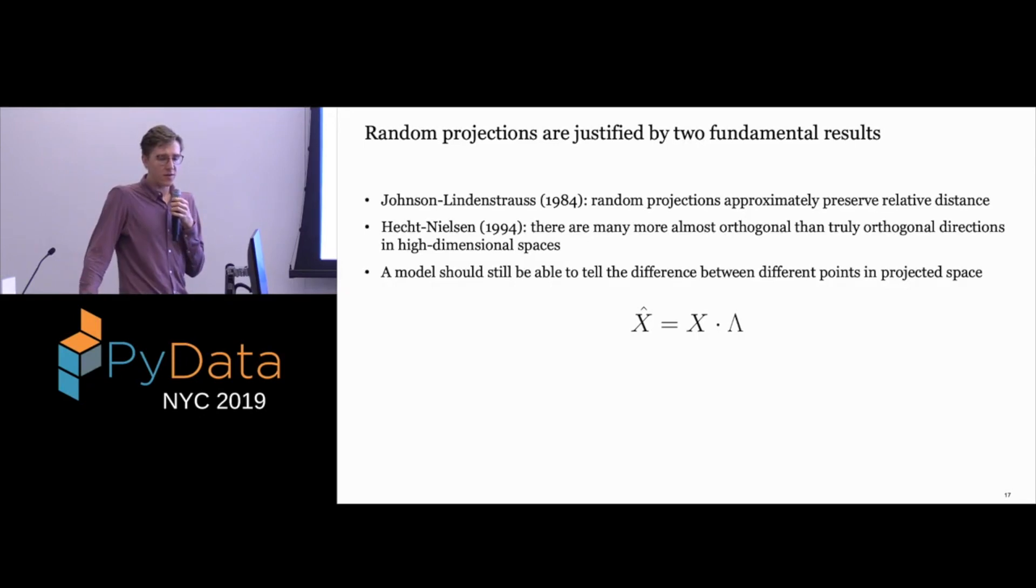These two theoretical results are kind of why random projections would work. The Johnson-Lindenstrauss lemma says that random projections approximately preserve relative distance, and maybe these are gross oversimplifications, so if you're a random projection guru, maybe save it until after the talk. And then this Hecht-Nielsen result that says there are many more almost orthogonal directions than there are truly orthogonal in high-dimensional space, and this idea of almost orthogonal becomes closer and closer to orthogonal as you get more and more dimensions. Basically, what these are saying when you add them up is that your model, if it could tell the difference in full space, it should be able to tell the difference in this X-hat space once it's projected. So if things are far apart, they remain far apart, and if they are pointing in different directions, they should remain pointing in different directions once you project them.